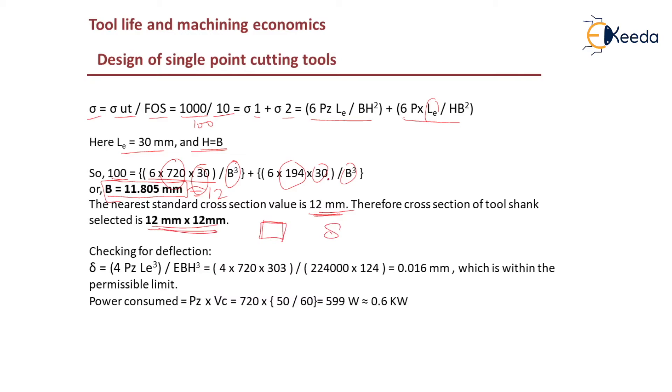Now we have arrived at the cross section. Now we need to find out the deflection which is produced by this load. As we have already discussed, delta equals 4 Pz Le cubed divided by E bh cubed. 4 times Pz is 720, Le is 30 cubed.